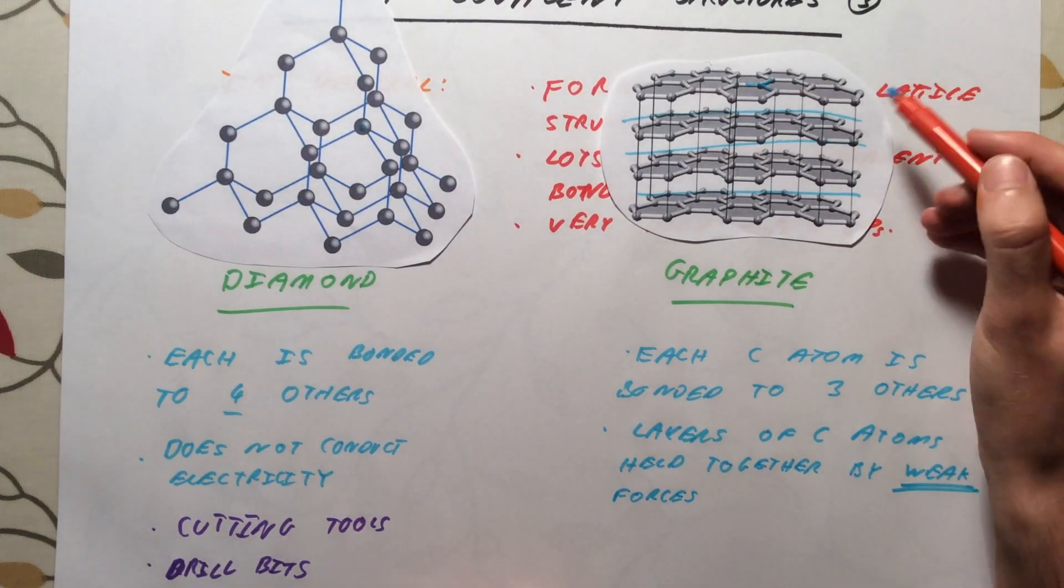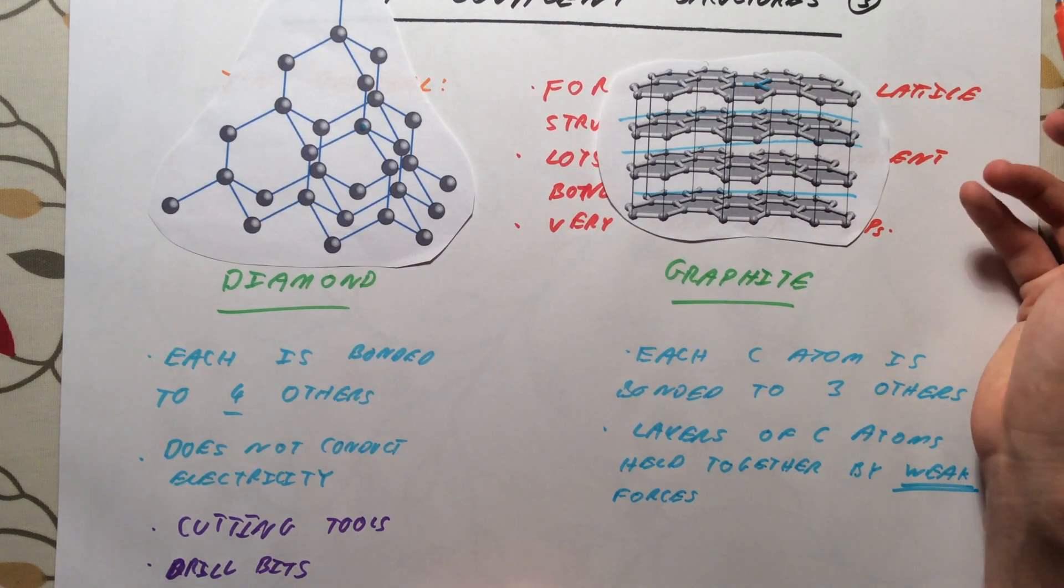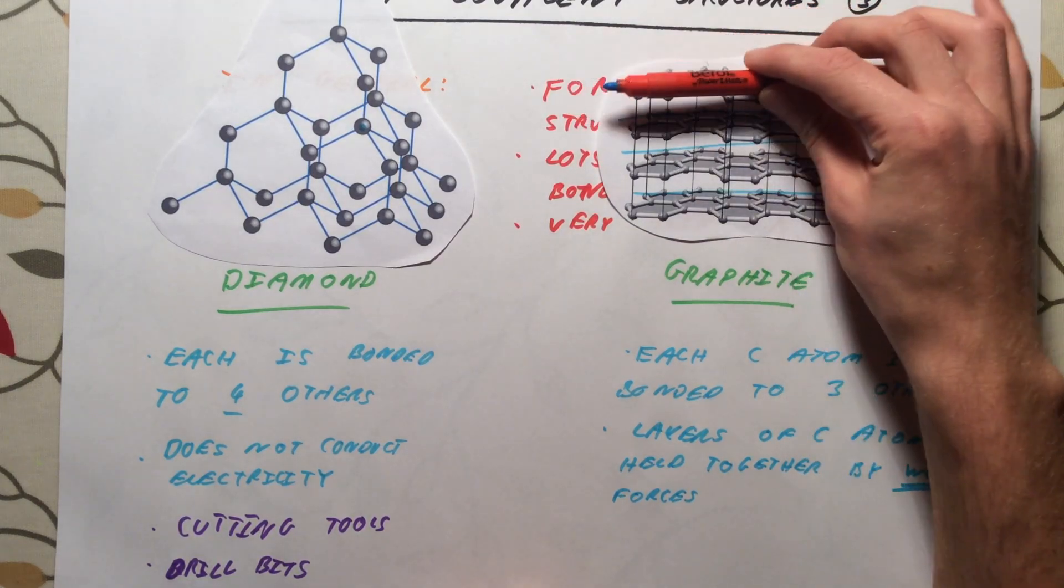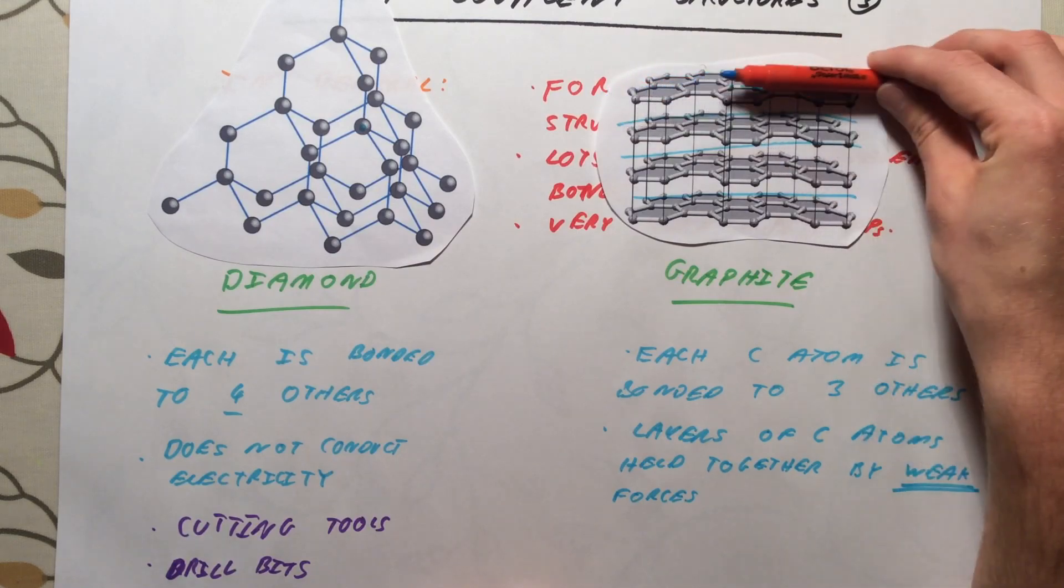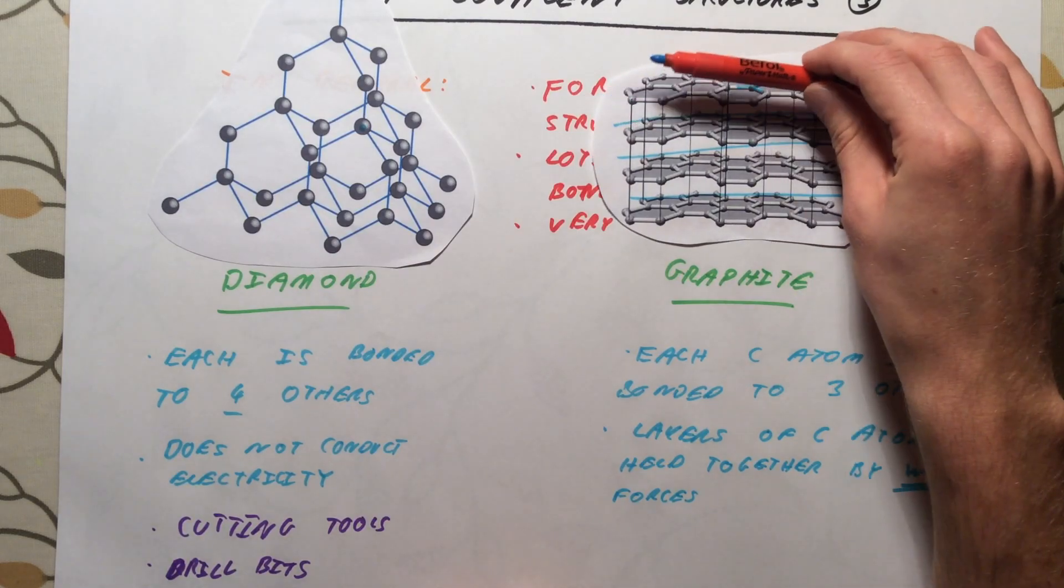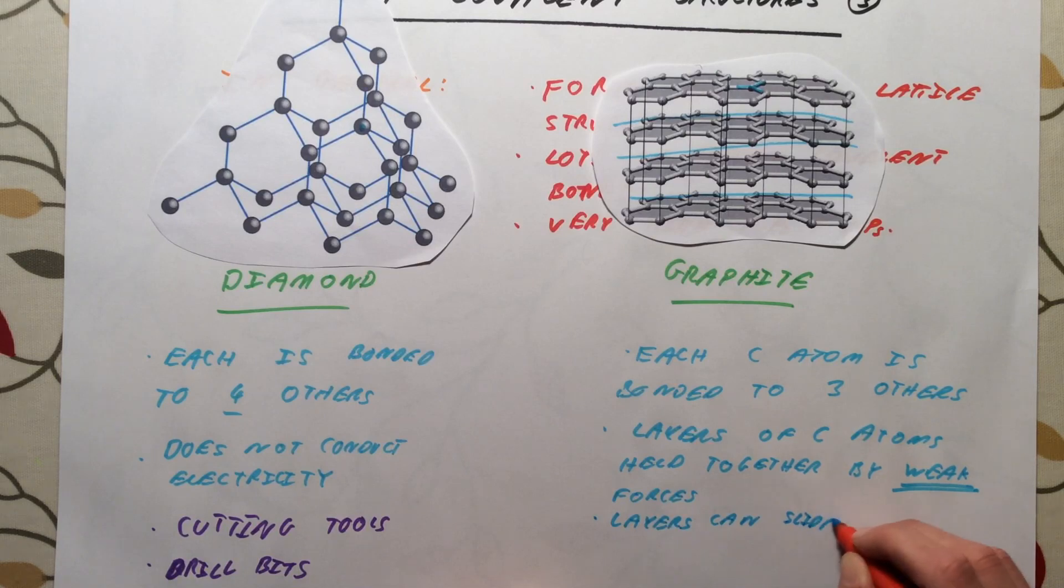So to melt graphite, I would have to break all of these strong covalent bonds. However, the layers themselves are only held together by weak forces. This means that graphite, the layers, can slide over each other very easily. So the layers can slide easily.